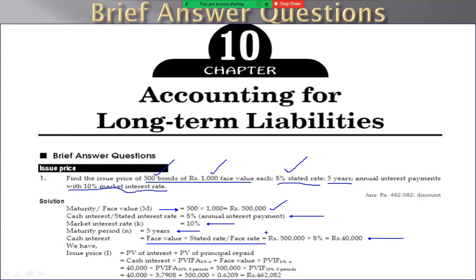Now we have the formula. Issue price equals present value of interest plus present value of principal repaid. Present value of interest equals interest into PBIFA (k%, n) plus face value into PBIF (k%, n).